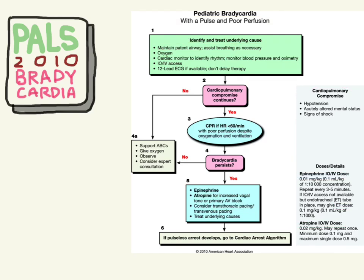Now we're going to talk about bradycardia. This is the PALS 2010 bradycardia algorithm. When they talk about bradycardia, they're talking about people who have bradycardia and cardiorespiratory compromise. So they have a pulse, but they have poor perfusion. If they ever lose their pulse, then you need to go to the algorithms that talk about pulseless arrest.